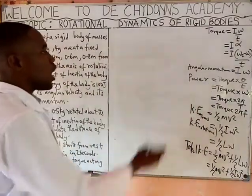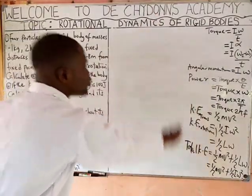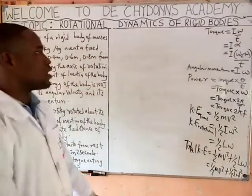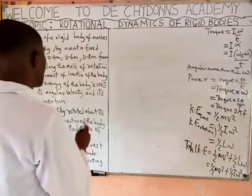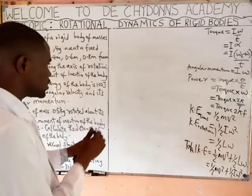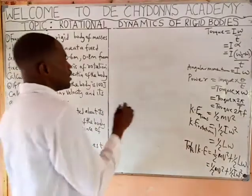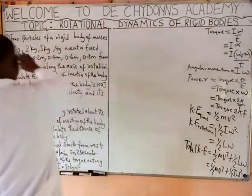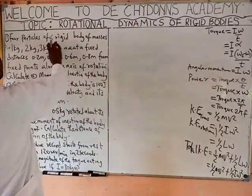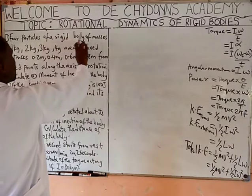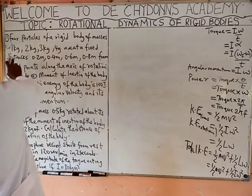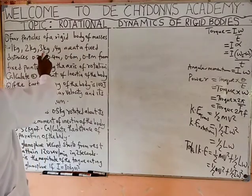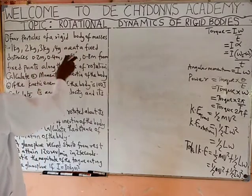All these formulas, we write them down as we solve our question. Let's see the question. Four particles of a rigid body of masses 1 kg, 2 kg, 3 kg, 4 kg...